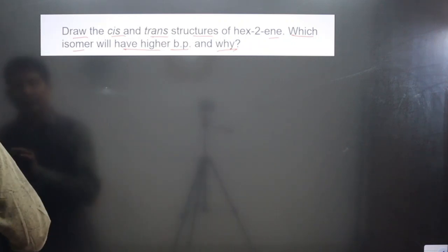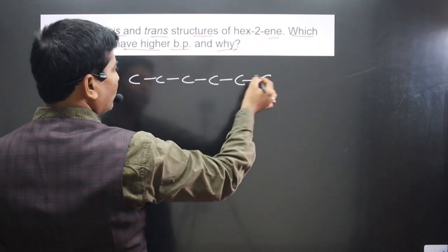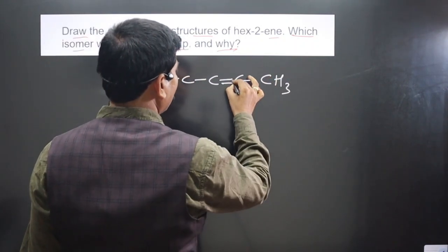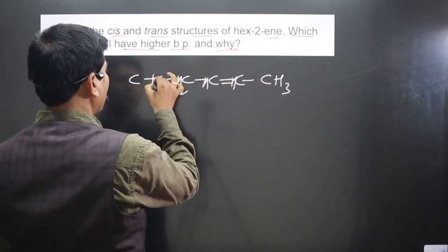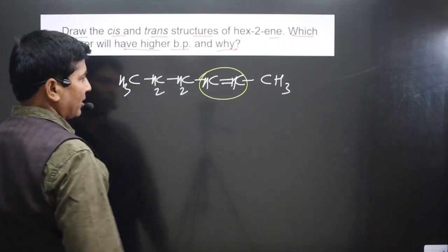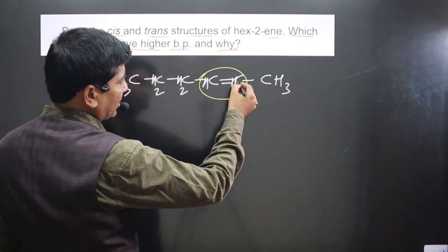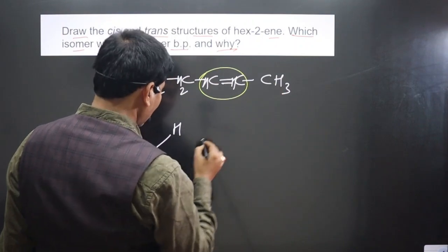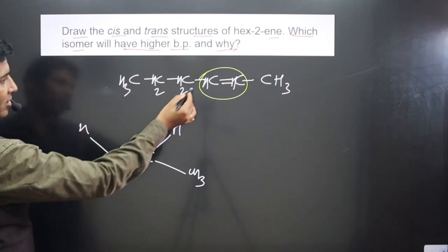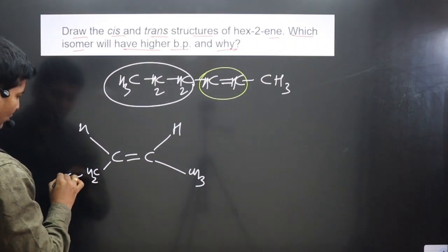Hex-2-ene has six carbons — one, two, three, four, five, six — with a double bond at the second carbon. Attaching hydrogens to satisfy the valency of carbon gives us CH3 on one end, then CH2CH2, with the double bond in the middle. Hydrogen is attached to each carbon of the double bond, and CH3 is also attached on one side.